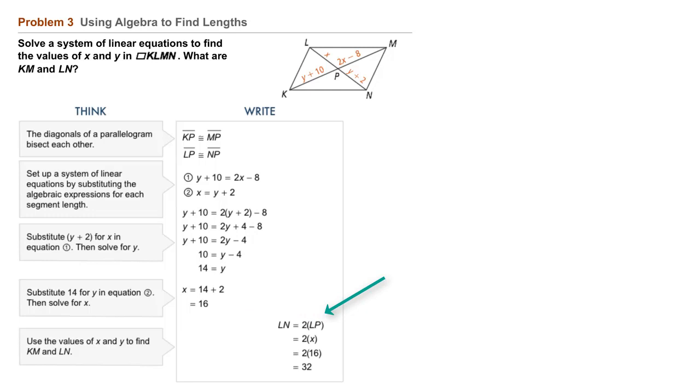A similar process to find LN. 2 times LP, LP is X, X is 16, and 2 times 16 is 32.